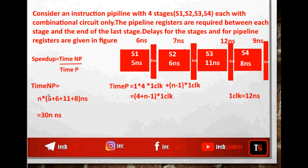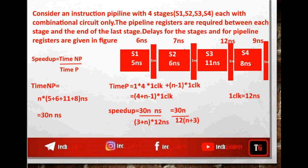The speedup is the time taken for the non-pipelined approach divided by the time taken for the pipeline approach: 30n nanoseconds divided by (4 + n - 1) × 12 nanoseconds. Taking n out and as n tends to infinity, the speedup approaches 30 / 12, which equals 2.5.